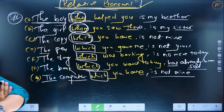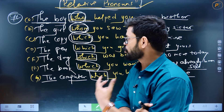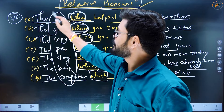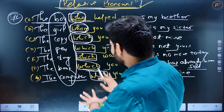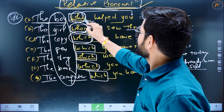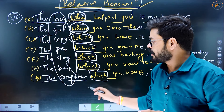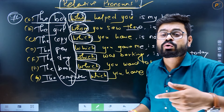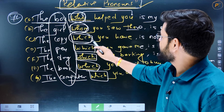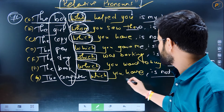Now you can see — in this particular situation, these words are all your relative pronouns, relating these particular nouns. And phrases like 'who helped you', 'whom you saw there', 'which you have', 'which you gave me', 'which was barking', 'which you want to buy', 'which you have' — inhne kahate hain subordinate clause.